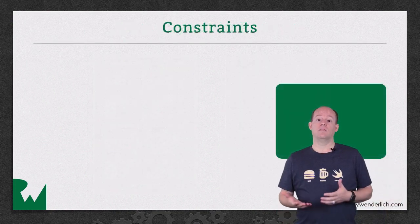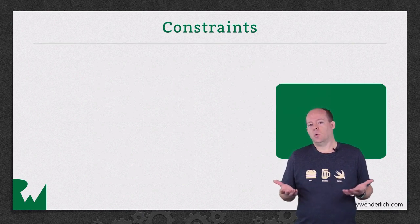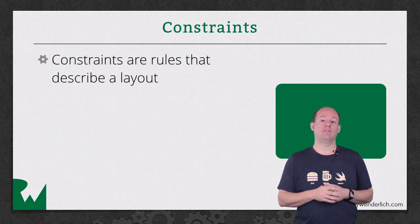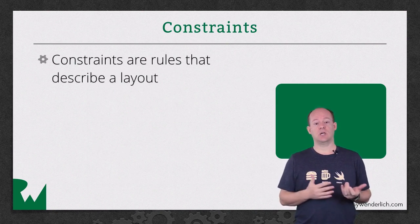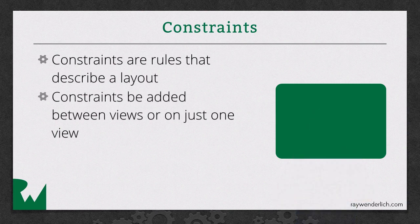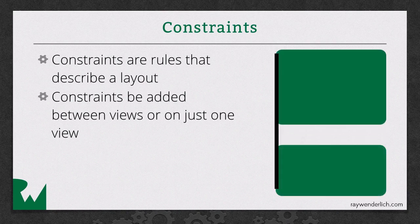Constraints are at the heart of Auto Layout, and I'm going to be talking a lot about them. Just what are these constraints exactly? Constraints are rules that define an aspect of the position or size of a view. Constraints can be added on just one view — for example, that a view should be 100 points wide — or they can describe the relationship between properties on two views, for example, that a view should be 20 points from the top of its super view, or that the left edges of two views should align.